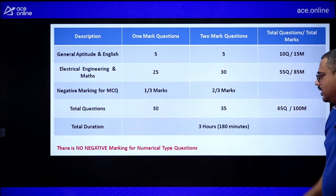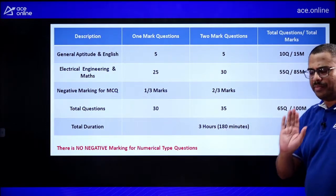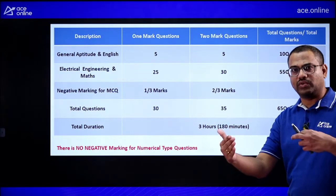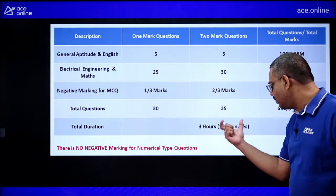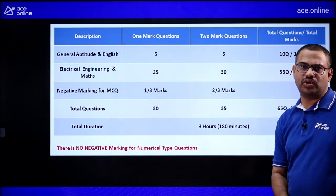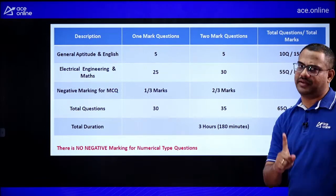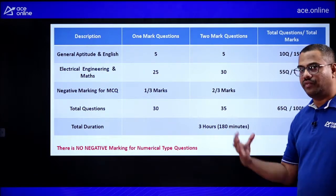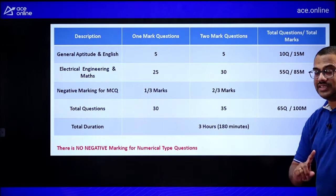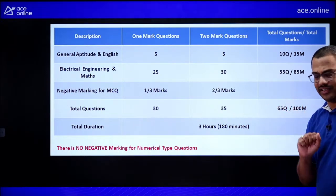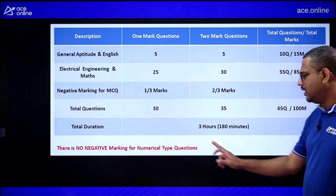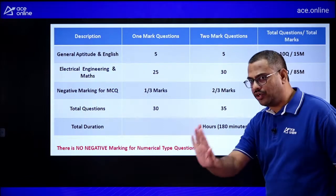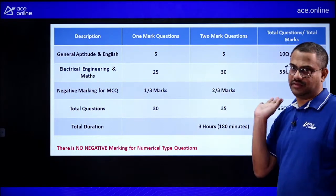Total questions: 30 one-mark and 35 two-mark, totaling 65 in 3 hours (180 minutes). A competitive exam is not like a B.Tech general exam where you write 5 out of 8 questions. Here, you must attempt the full paper — that is the only way to have a probability of getting a top 400, 300, or even top 10 rank for IIT admission. No negative marking for NAT and MSQ, but MCQ has negative marking.